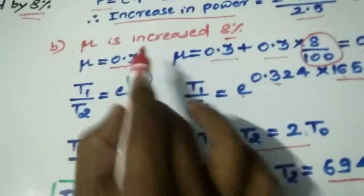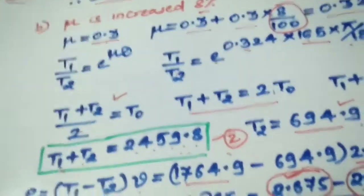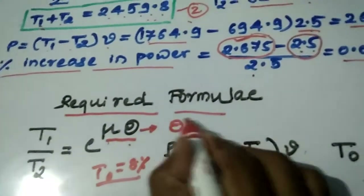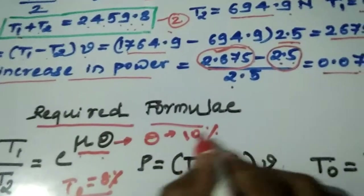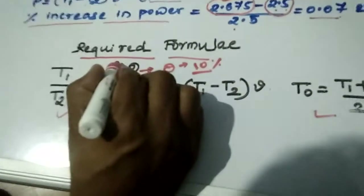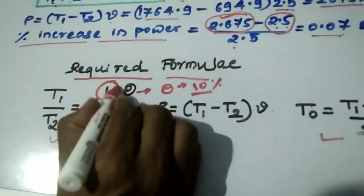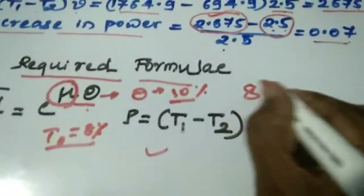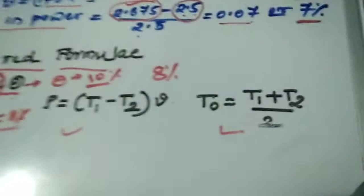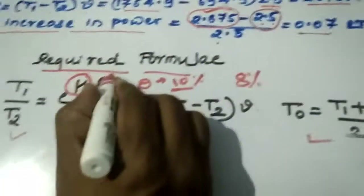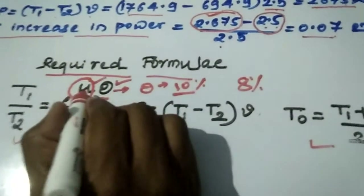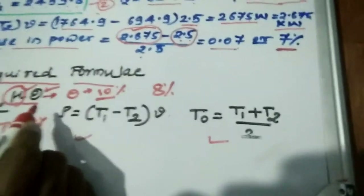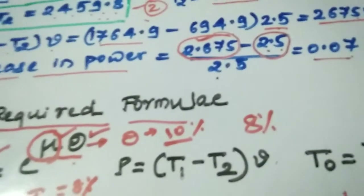In some examples, they may also ask for the increment in the lap angle theta — for example, a 10% increment in theta. The procedure is the same regardless of which parameter is incremented or what percentage is used. Various parameters — mu, theta, T1, T2 — can be varied, and you can solve for the effect in each case.